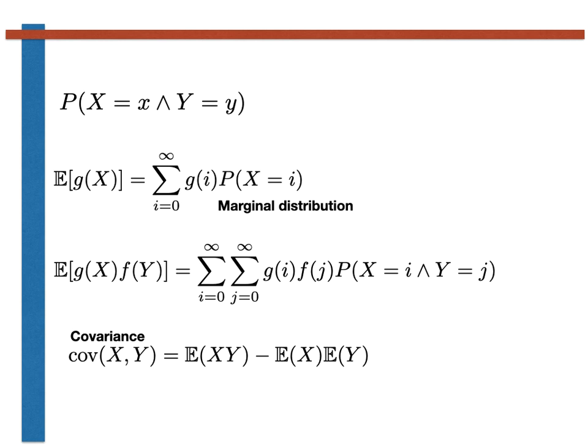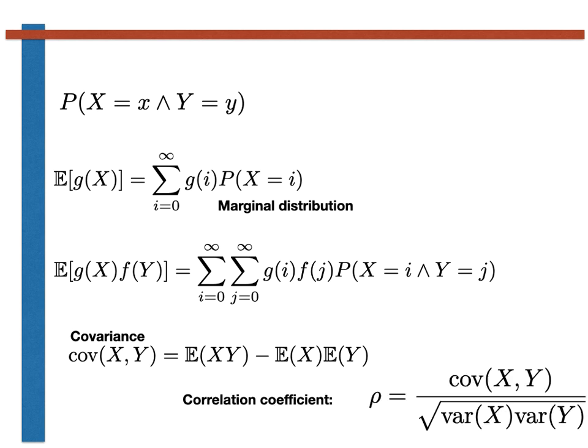Lastly, a final quantity you might be asked to compute is the correlation coefficient, defined by the expression shown here. To calculate it, you need to compute the covariance for the two random variables, and then compute the two marginal distributions so that you can calculate the variances of the two random variables in the usual way.